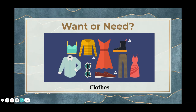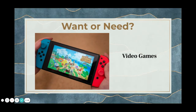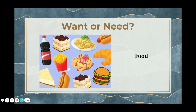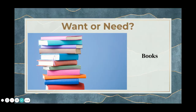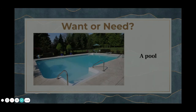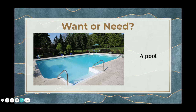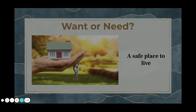Clothes are a need — they keep us warm. But designer or fancy clothes would be a want. What about video games? Those are definitely a want. I know sometimes it feels like you need them, but no. Food is definitely a need, but that doesn't mean you need fancy food or takeout — you just need some sort of food. Books, as much as I want to say they're a need, are actually a want. What about a pool? Definitely a want.